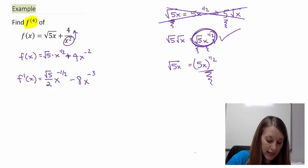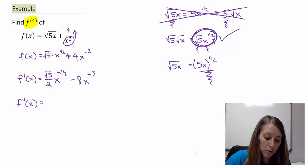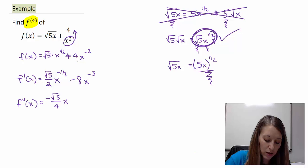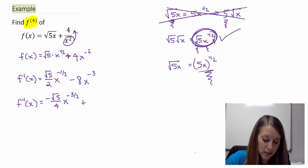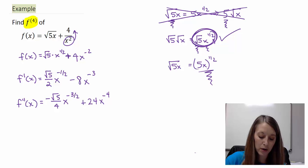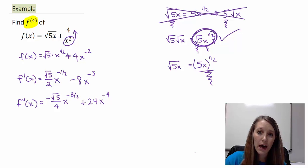Now I'm ready for the second derivative, f double prime of x. Multiply the coefficient and exponent again: negative square root of 5 over 2 times negative one-half gives negative square root of 5 over 4, times x to the negative three-halves. For the second term: negative 8 times negative 3 gives positive 24x to the negative 4th power. If I could simplify, I would, but I can't.